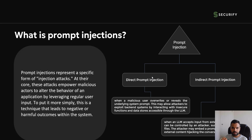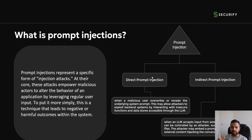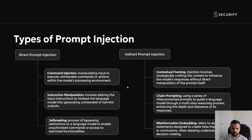Indirect prompt injection is when the LLM accepts input from an external source. For example, suppose there is a model where I give it a website, and that website hosts some malicious content. The model uses that data for training, and because the training data is poisoned, it's going to give poisoned output as well. It's not a direct injection — it's indirect injection via some third-party website.